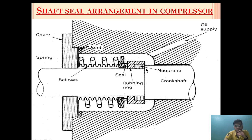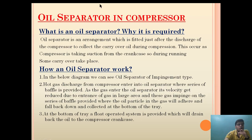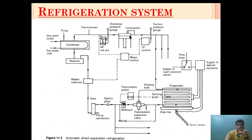The parallel and perpendicular leakage is arrested as described. Now, why is an oil separator used in a compressor? An oil separator is an arrangement fitted just after the discharge of the compressor to collect carry-over oil during compression. This occurs because the compressor takes suction from the crankcase, so during running some oil carry-over takes place. After the discharge, an oil separator arrangement is provided.